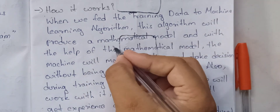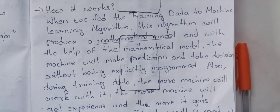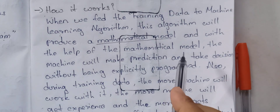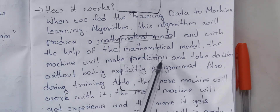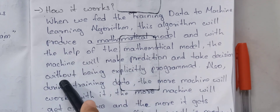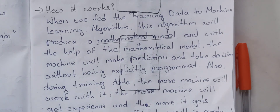A learning system will produce a mathematical model. I will show it the data and it will produce an automatic mathematical model. If that mathematical model helps, the machine will make a prediction and take a decision without being explicitly programmed. I will not have an explicit program — the model does that automatically.